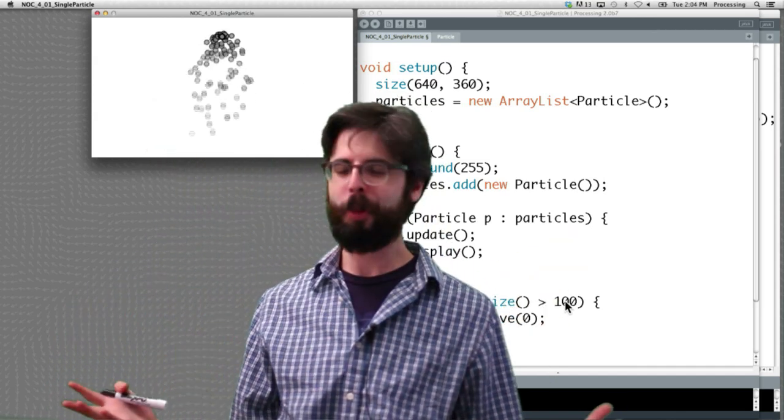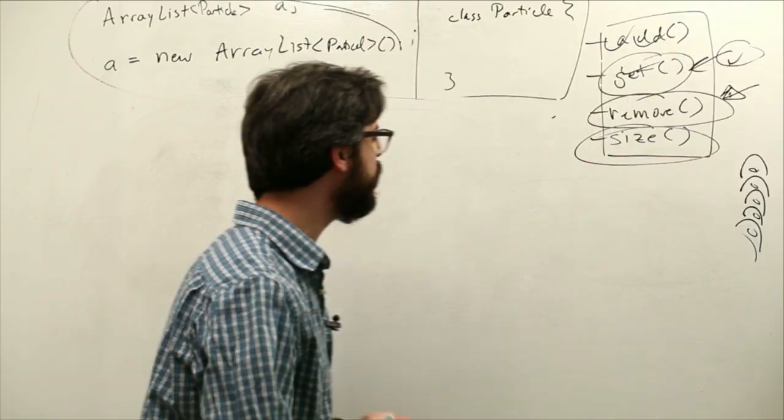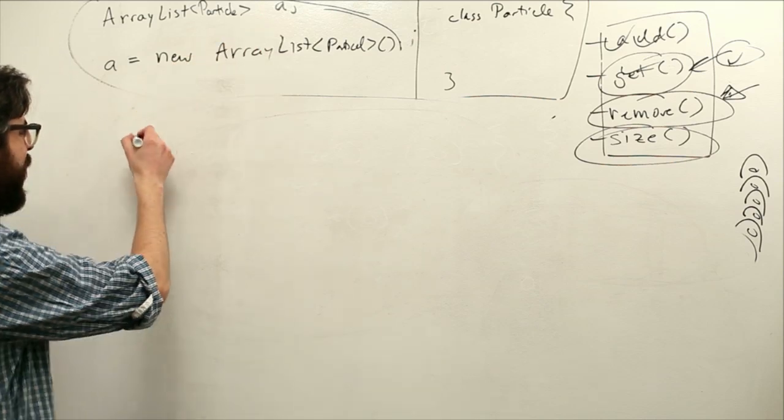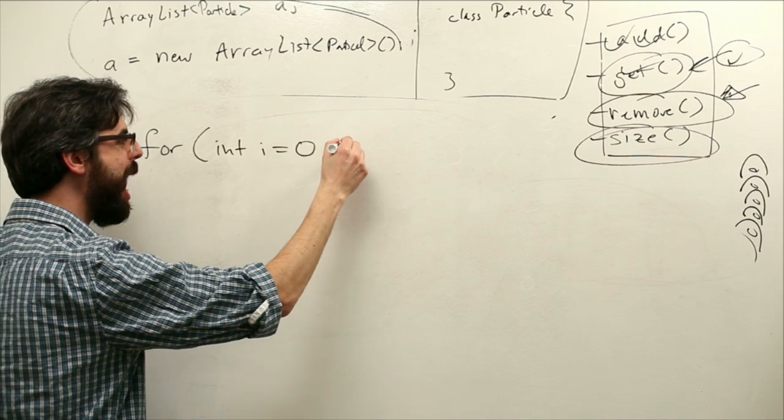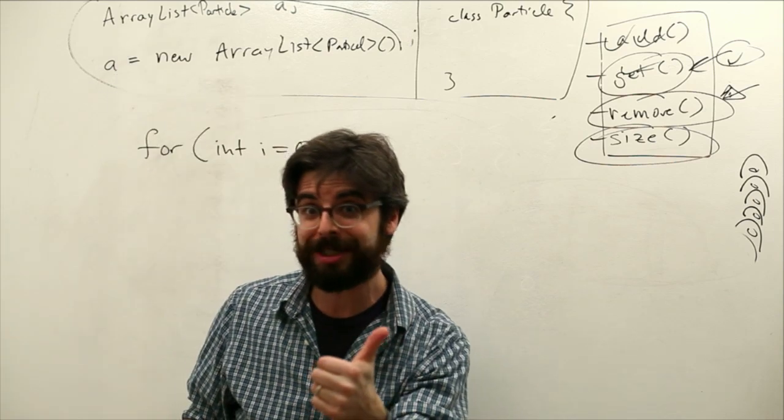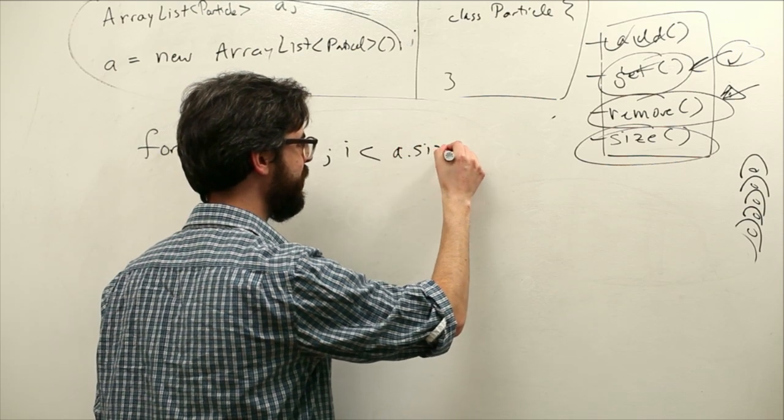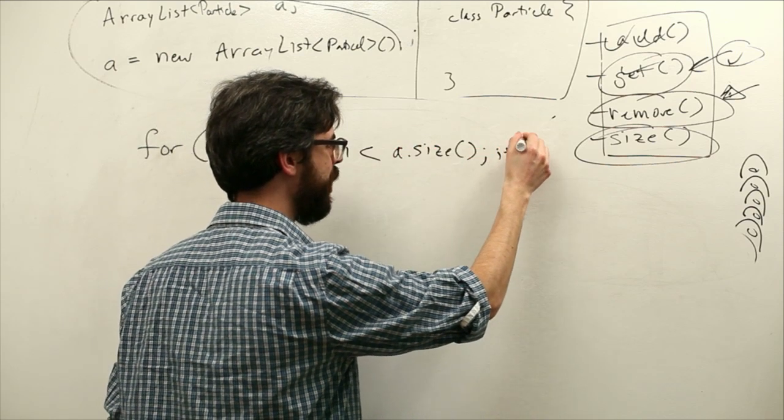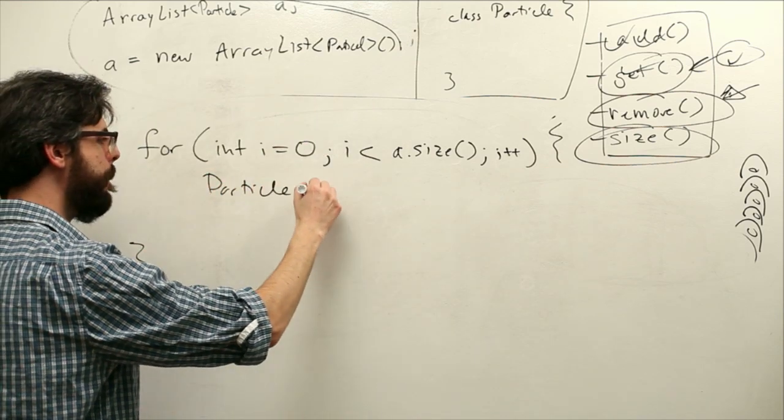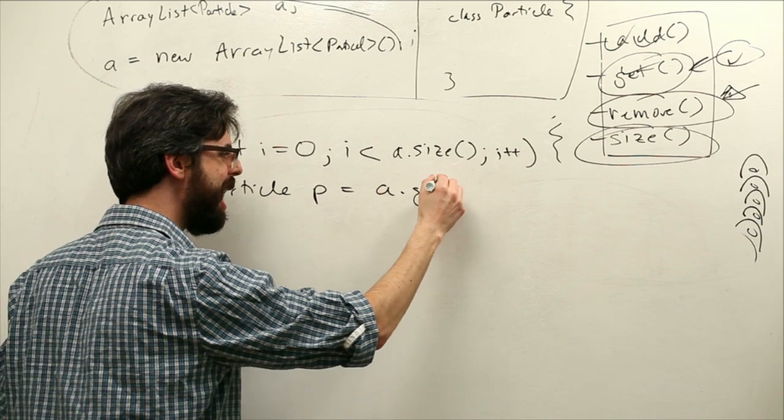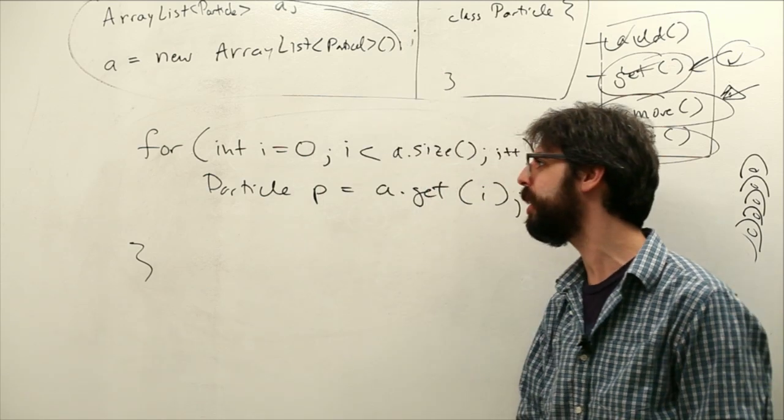What we want to do right now is modify the ArrayList while we're in that loop. We want to say for every particle in the ArrayList particles, check every one. If one of them is finished, delete it from the ArrayList. So we want to delete things while we're looping through the ArrayList. So we can't use this loop. But we know how to write a loop that counts. We could use a loop that counts.